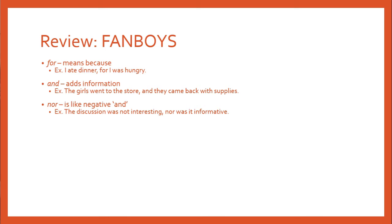'Nor' is another uncommonly used coordinating conjunction — it's like a negative version of 'and.' The example is: 'The discussion was not interesting, nor was it informative,' meaning the discussion was not interesting and it was not informative. You might notice the structure of sentences with 'nor' is very strange — you basically have to reverse the order of a standard sentence, moving the negative to the front and the verb before the subject. This makes it very difficult for people whose native language is not English to use.